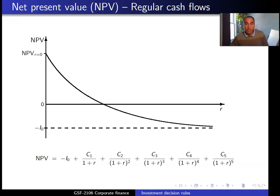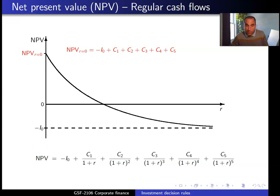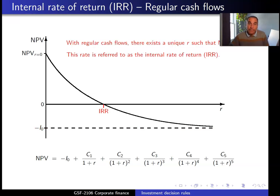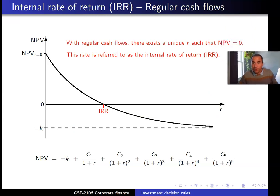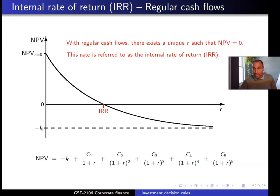Here is a graph of the net present value of the project for different discount rates when the project has regular cash flows. The NPV when the interest rate is zero equals the sum of all cash flows. The NPV when the interest rate goes to infinity is minus the initial investment. With regular cash flows, there can only be one discount rate that gives an NPV equal to zero, and that discount rate is referred to as the internal rate of return.